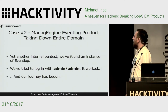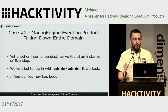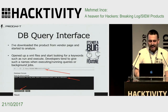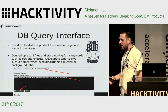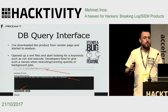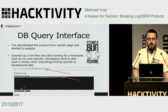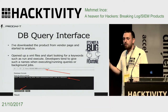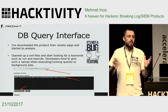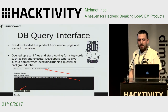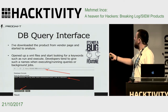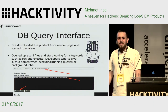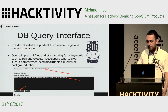Our second case was another internal penetration test where we found this product and tried to log in with admin/admin — and it just worked. But that was just the beginning. We downloaded the latest version from the vendor page and opened all the XML files to see endpoints and associated class definitions. We looked for special keywords like 'run' and 'execute', because developers love to use those keywords for endpoints executing queries or background jobs. We detected the runquery.do endpoint — not a bug, it's a feature — that gives you the ability to execute SQL queries against the product's database.